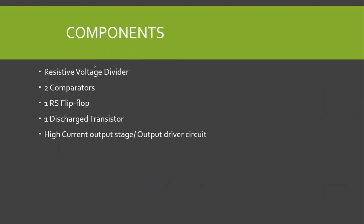Now let us discuss the components of the 555 timer, as we are moving towards its block diagram. There are five basic components of the 555 timer: a resistive voltage divider, two comparators, one RS flip-flop, one discharge transistor, and finally the output stage — which is the output driver circuit. This output stage is capable of driving TTL loads and can source or sink up to 200 milliamperes of current.